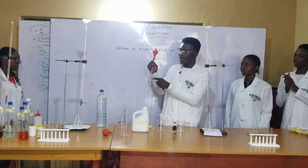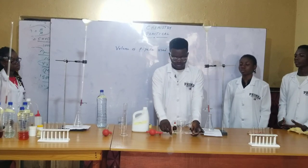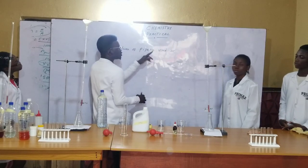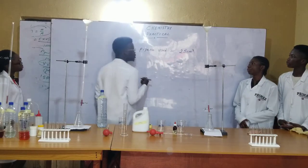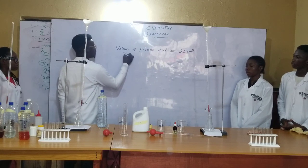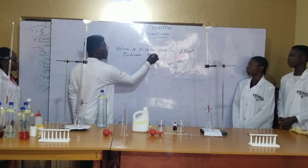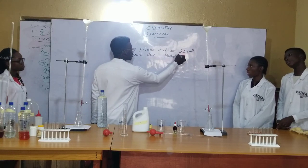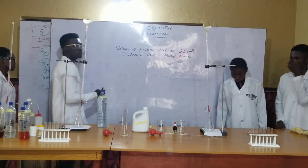We are using a 25 ml pipette, and this 25 ml pipette is what you write on top of your table — the volume of pipette used is 25 cm³. Then write what indicator you are using: methyl orange.